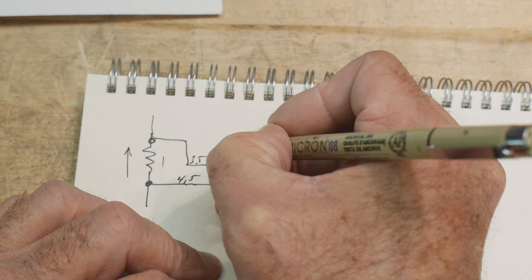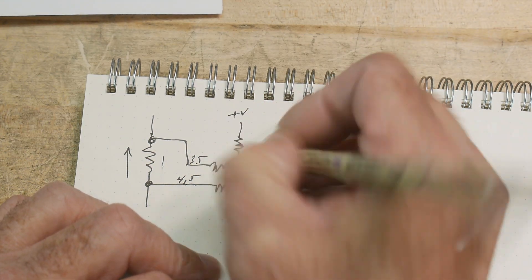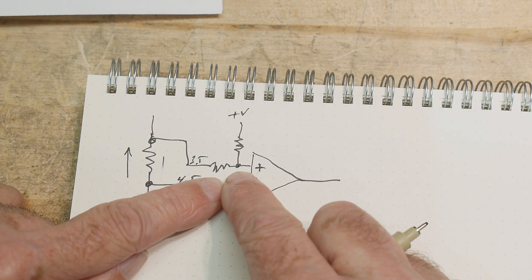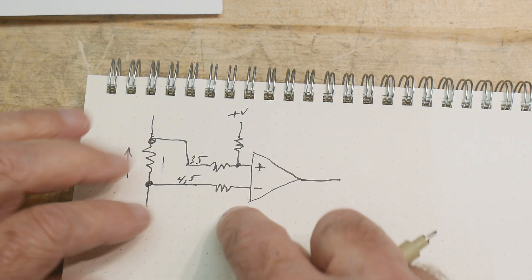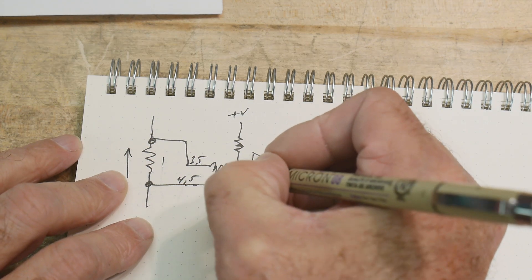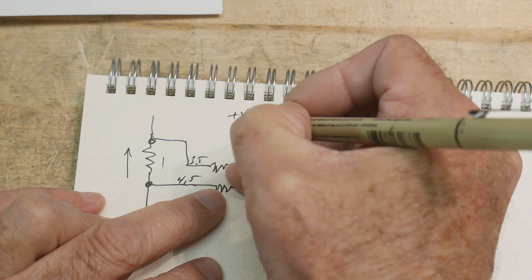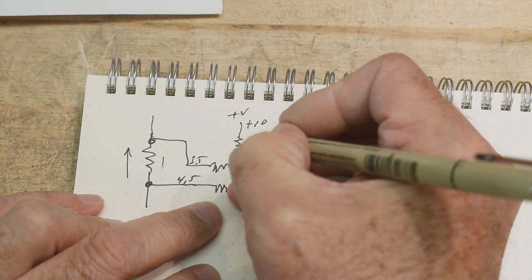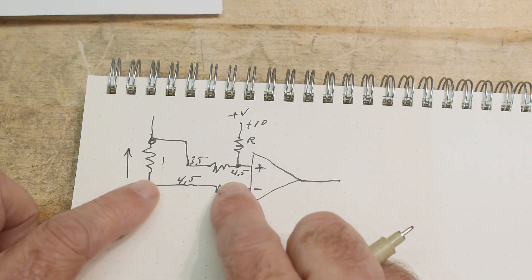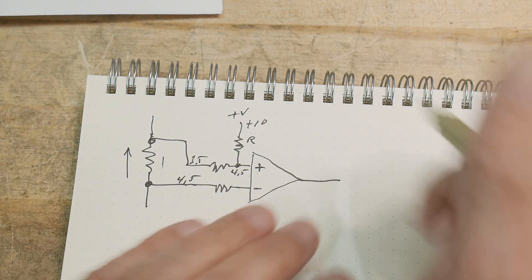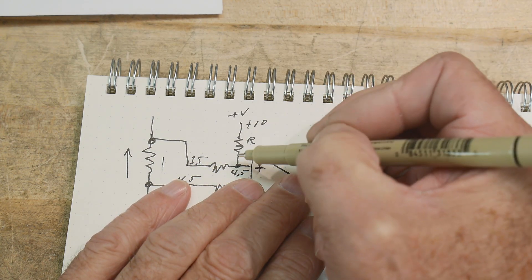And so we need to turn this three and a half into four and a half somehow magically. So what if we put a resistor here and we pull this up a little bit? And we set it so that the steady state condition of this whole thing is that this point here ends up being four and a half volts. So this maybe this is plus 10 volts and this is some resistance that gives us this four and a half volts.